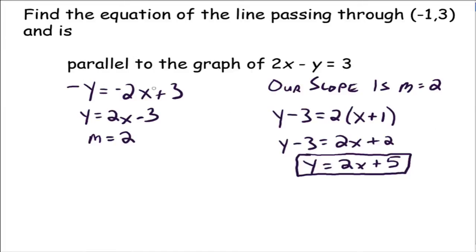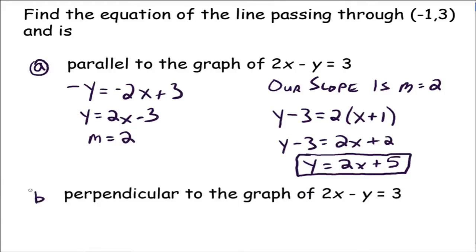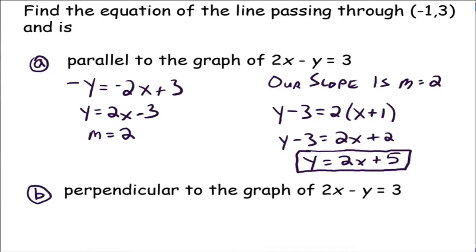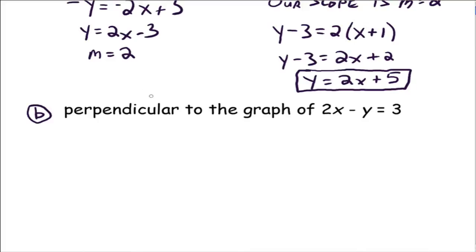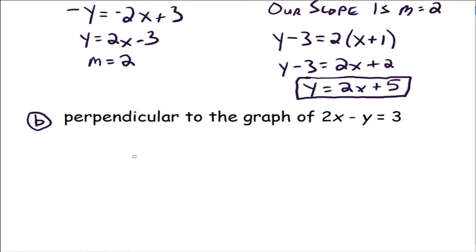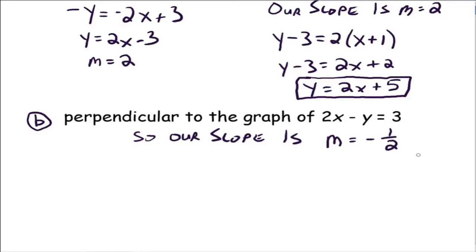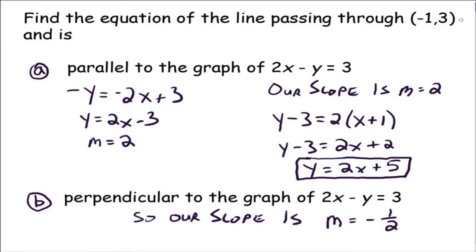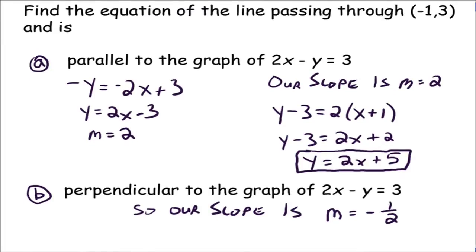Now let's do another example — call this part B. Find the equation of the line passing through (-1, 3), but this time we want our line to be perpendicular to the graph of 2x minus y equals 3. The slope of 2x minus y equals 3 is m equals 2, as we just found. So our slope has to be negative 1 half, because lines are perpendicular if their slopes are negative reciprocals of each other.